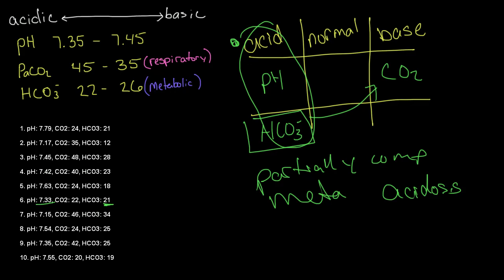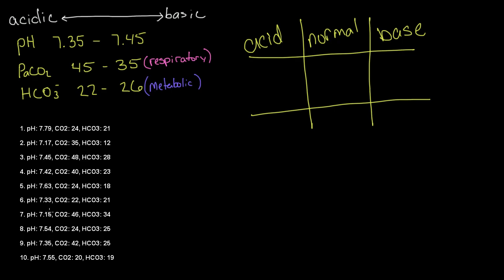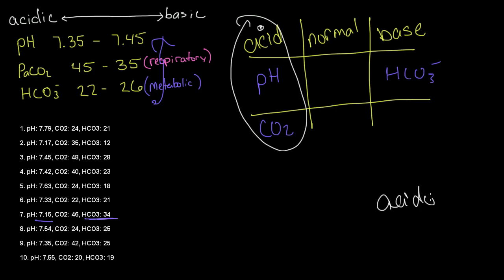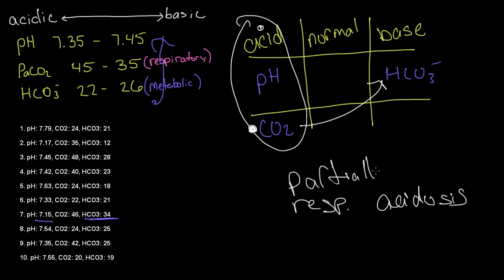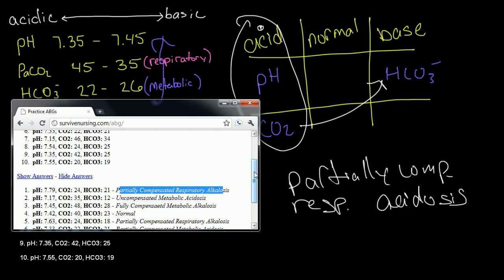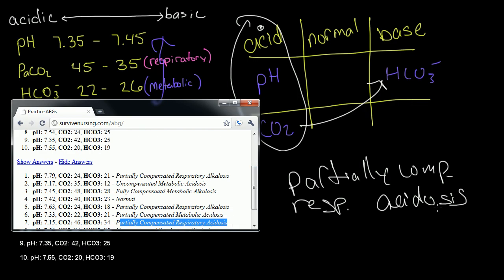Problem number seven: pH of 7.15, which is acidic, so pH goes in the acid column. Our CO2 is 46 — it's also acidic, so CO2 goes in the acid column as well. And our HCO3 is 34, which is basic, so it goes in the basic column. Our tic-tac-toe is in the acid column, so we are in acidosis. Our tic-tac-toe was solved with our CO2 value — CO2 is a respiratory parameter, so we are in respiratory acidosis. And our opposite parameter is in the opposite column, so we are partially compensated.